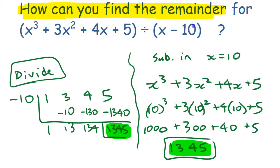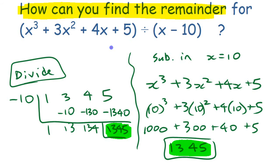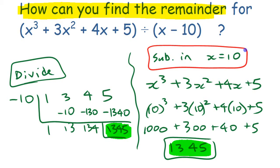This is exactly what the Remainder Theorem says: if you're looking for the remainder when you are dividing a polynomial, you can obviously divide and find that remainder, or you can use a shortcut — substitute in the root of the divisor, the thing you're dividing by, and you'll get the remainder. This is just one example but it's going to work every single time.